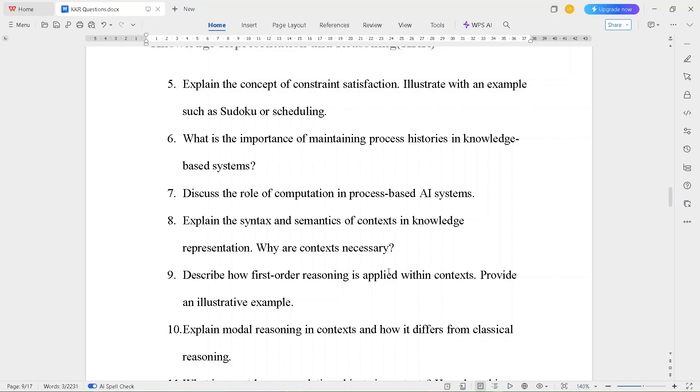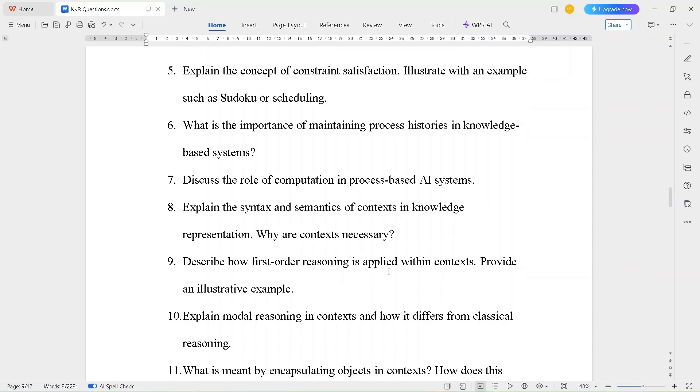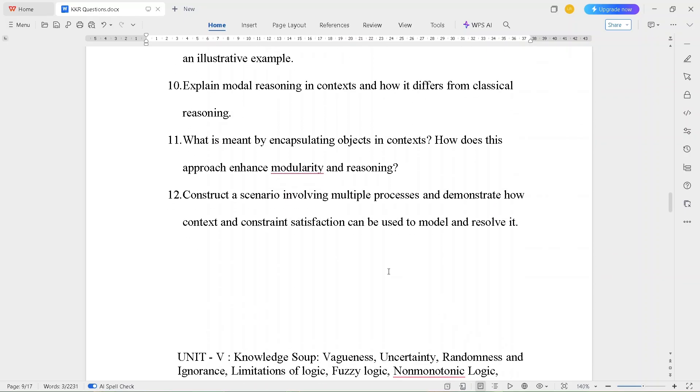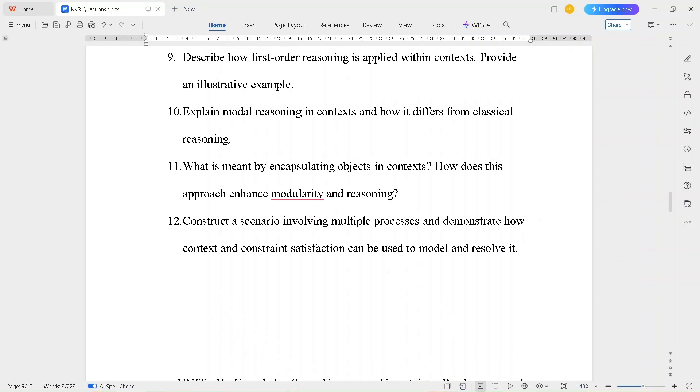Discuss the role of computation in process-based AI systems. Explain the syntax and semantics of contexts in knowledge representation. Why are contexts necessary? Describe how first-order reasoning is applied within contexts. Provide an illustrative example. What is meant by encapsulating objects in context? How does this approach enhance modularity and reasoning?